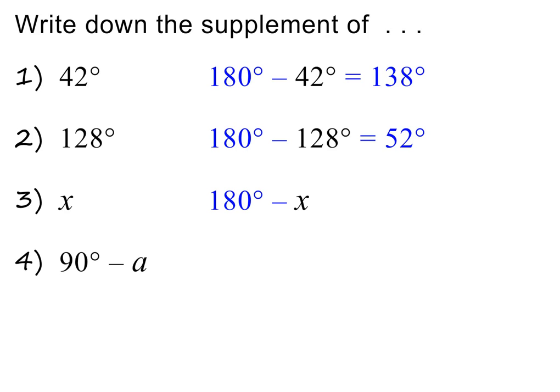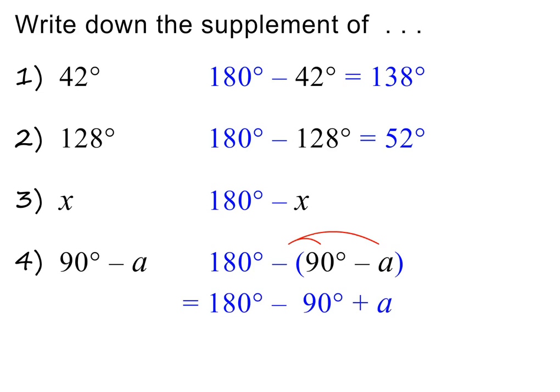And what about the supplement of 90 degrees minus A? To find it, we again subtract the given angle from 180 degrees, using brackets to show that we are subtracting the whole given angle. Next, we need to multiply the minus into the bracket. This is equal to 180 degrees minus 90 degrees plus A. The supplement is therefore 90 degrees plus A. Please pause to check my working.